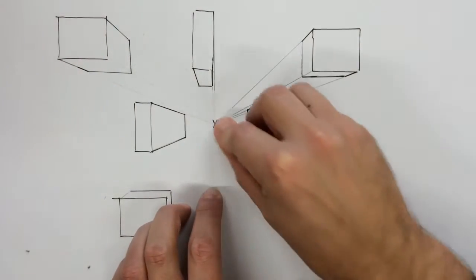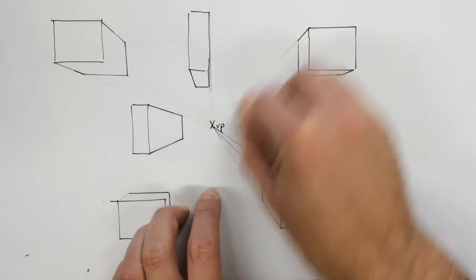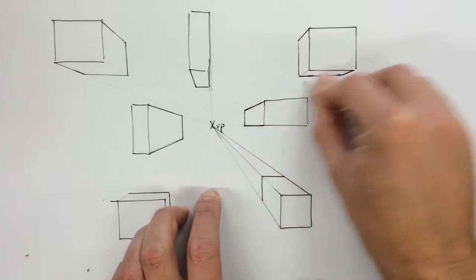Finally, start to rub off all of the projection lines you don't need to use, and you don't need to see any more.